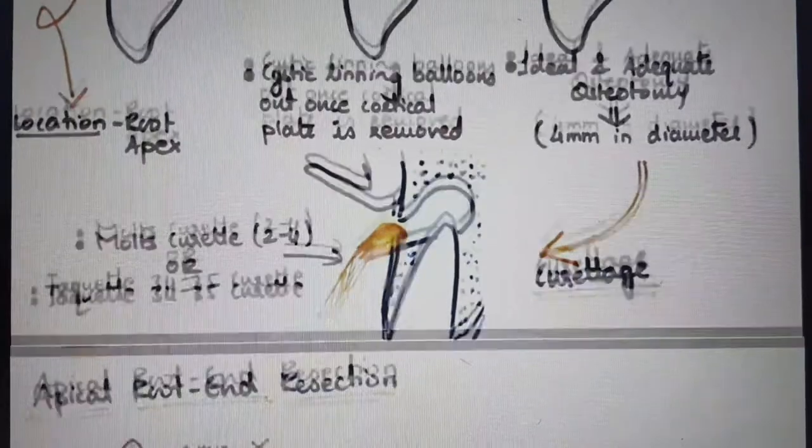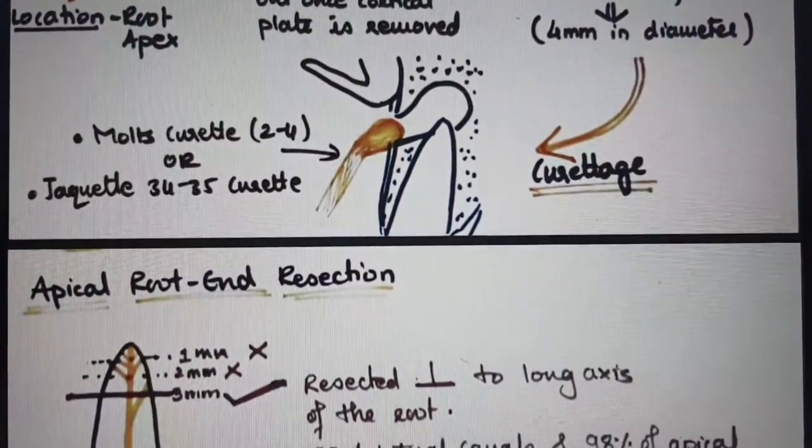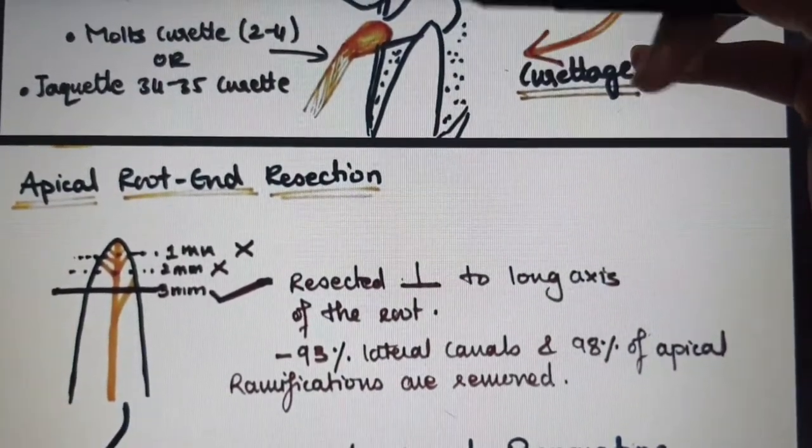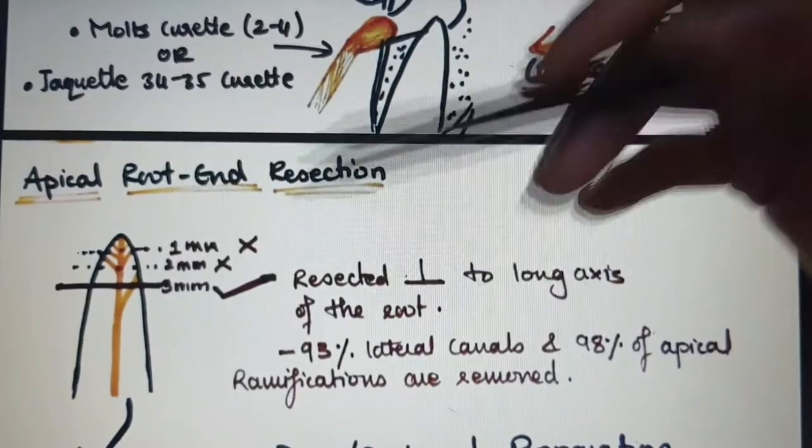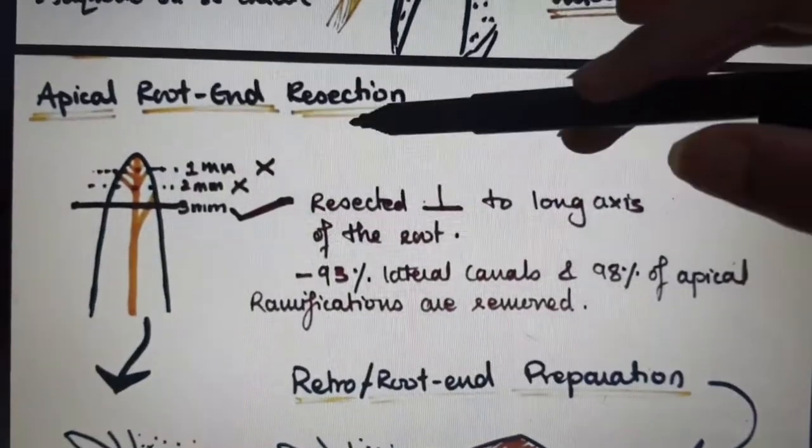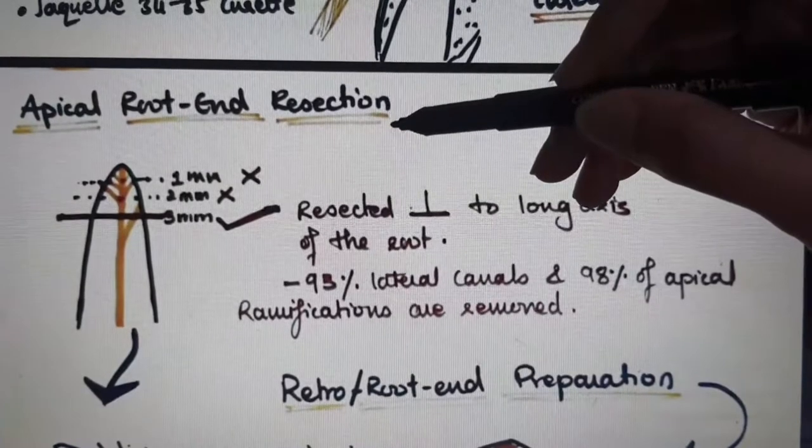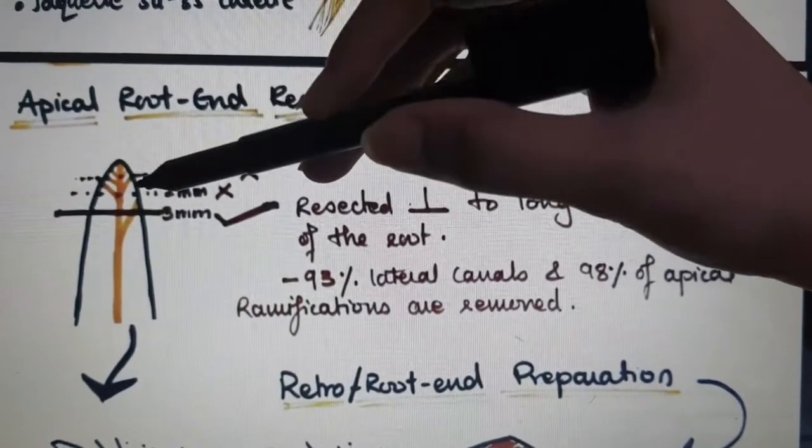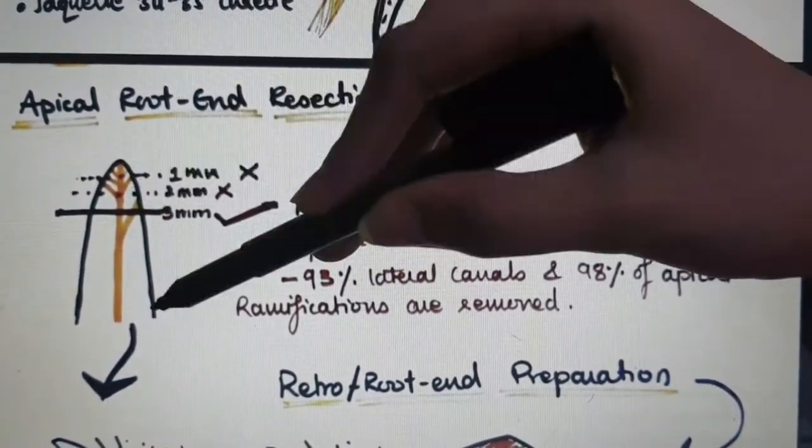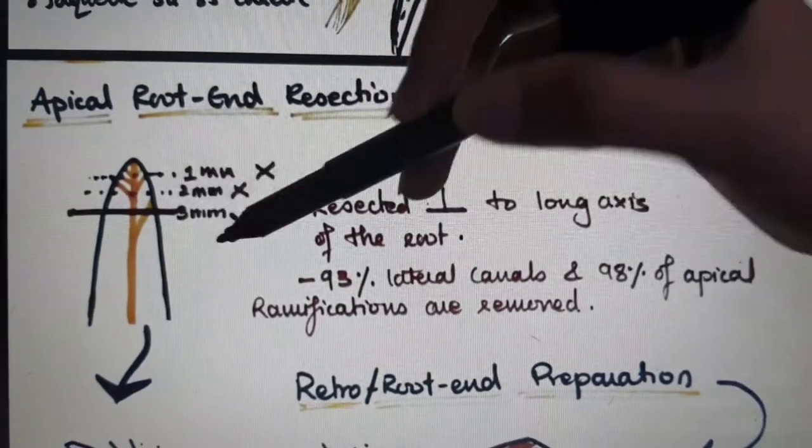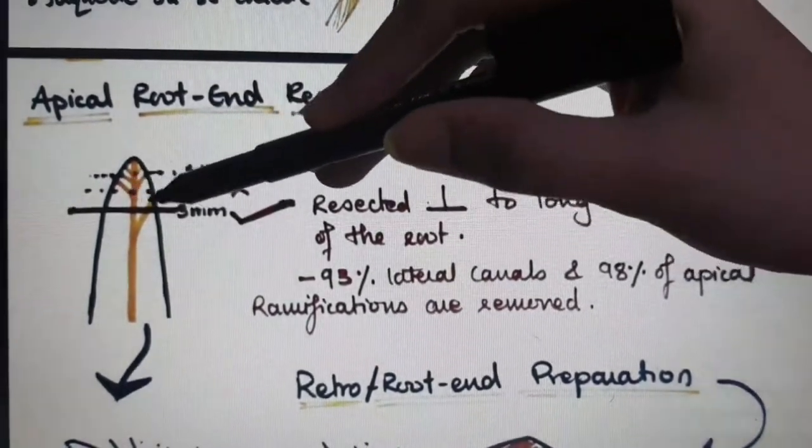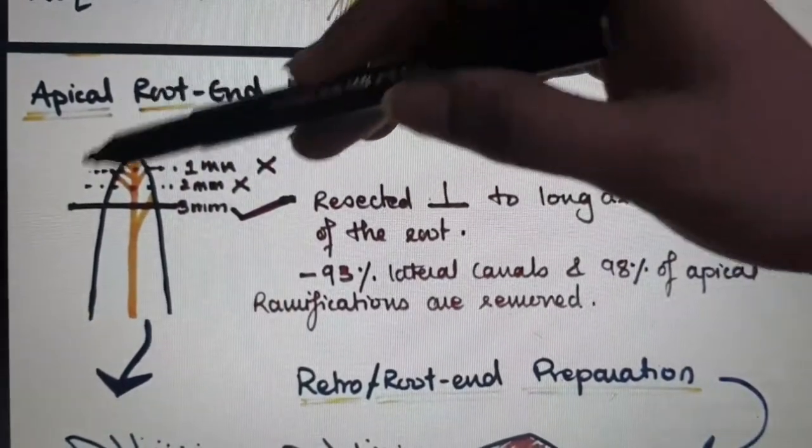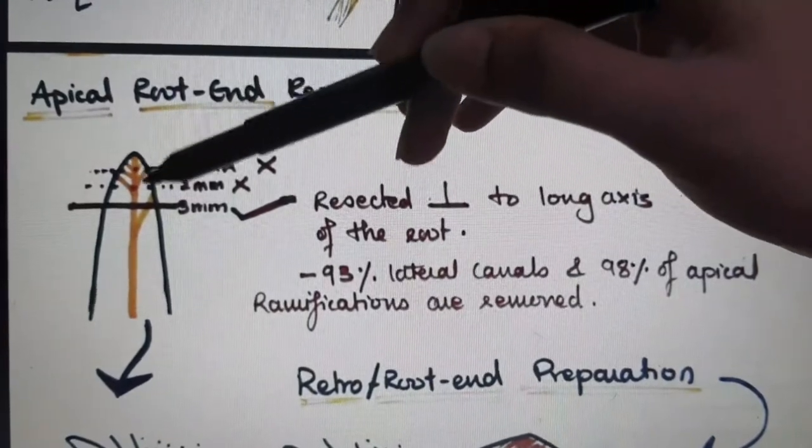The next step is root end resection. Before root end resection, always aim for a dry surgical field. In root end resection, the burr is placed perpendicular to the long axis of the root and we remove 3mm from the apex. Why 3mm? Because 93% of the lateral canals and almost 98% of apical ramifications are removed when we remove the root end 3mm.